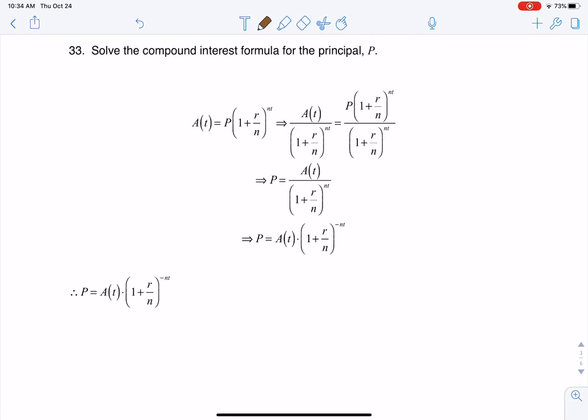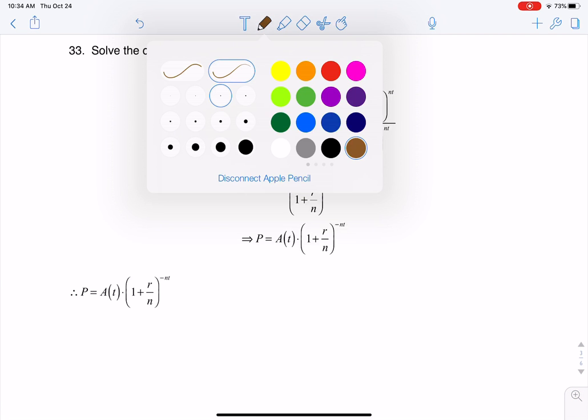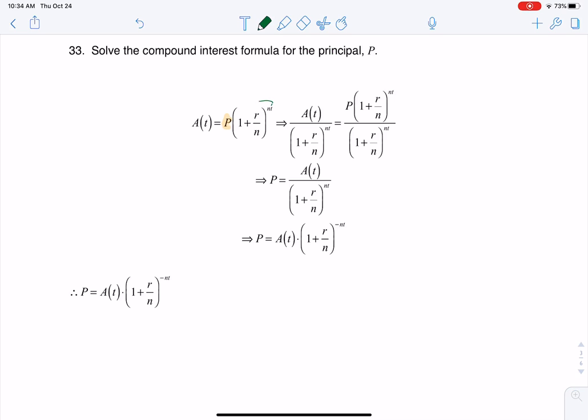And so keep in mind, this P that's right here, it's a letter, right? It's your principle. And everything around it is just a constant, right? So whatever, let me change colors here. Whatever this number is here, and I know it looks ugly, but it is just a number, right? And this is also just a number.